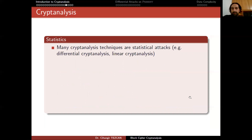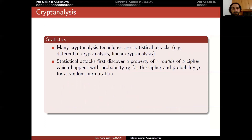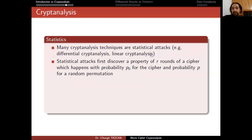Almost every attack listed is a statistical attack. For example, differential cryptanalysis and linear cryptanalysis are both statistical attacks. Statistical attacks first discover a property of r rounds of a cipher which happens with probability P0 for the cipher and probability P for a random permutation. This gives us a distinguishing attack — a way to distinguish r rounds of a cipher from a random permutation. Such a statistical property is referred to as a distinguisher.